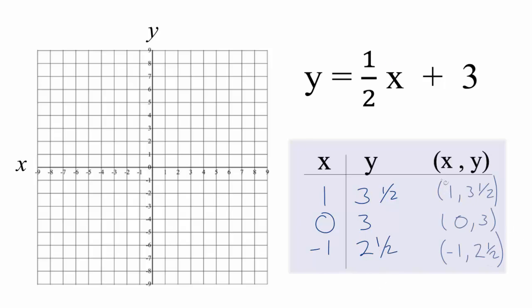So these are the points we'll put on our graph here for the equation y equals one-half x plus 3. So we have x is 1, y is three and a half. So here's 1 and we go up three and a half.